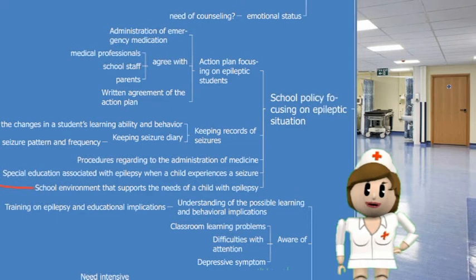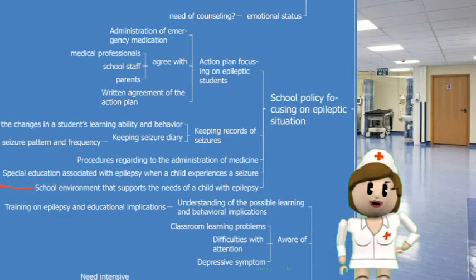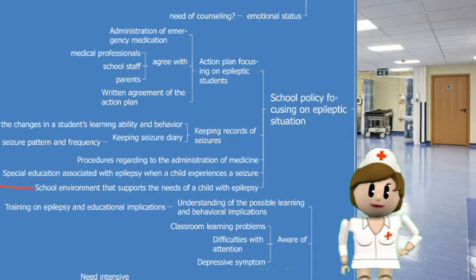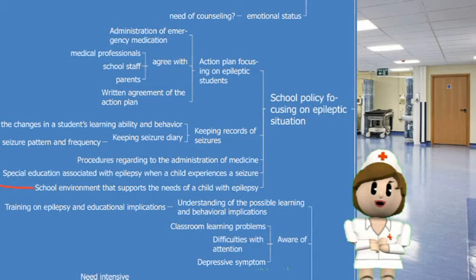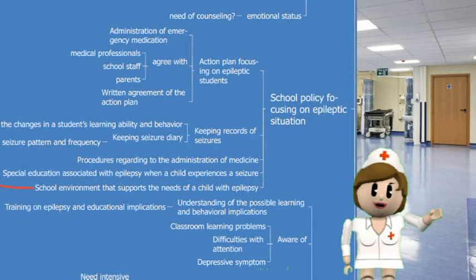Schools should have a seizure policy covering what to do when a child has a seizure, seizure record-keeping, medication administration procedures, special educational needs, and a supportive school environment. Staff should remain calm to avoid panic and maintain the child's dignity and privacy. For prolonged seizures or a series of seizures without regaining consciousness, emergency medication may be needed, requiring an agreed action plan between parents, school staff, and medical professionals. Teachers can also help by maintaining a seizure diary for Jack to help health professionals understand seizure patterns and frequency.